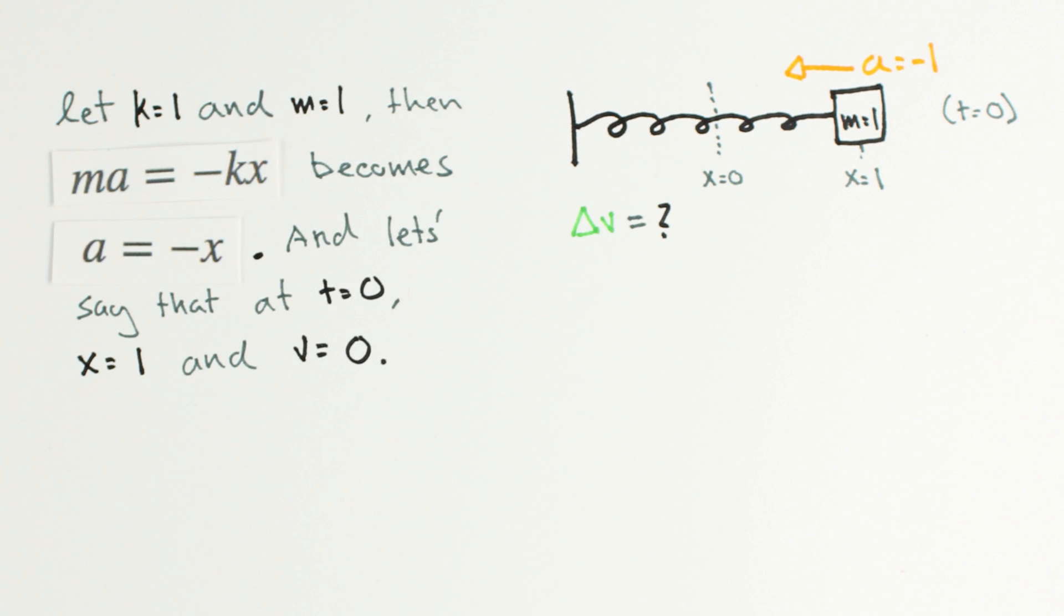That force accelerates the mass and changes its velocity in the direction of the force. But how much does the acceleration change the velocity? If we accelerate our mass with an acceleration of a for delta t seconds,